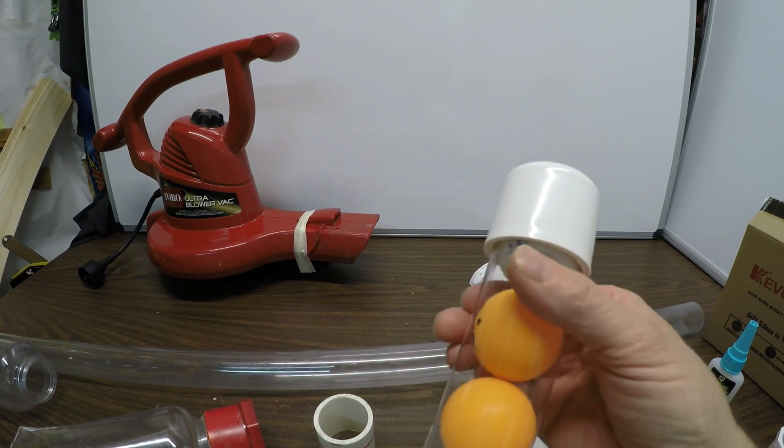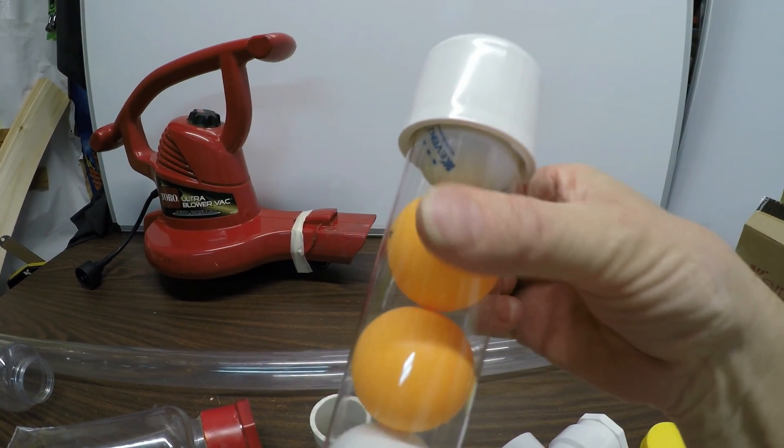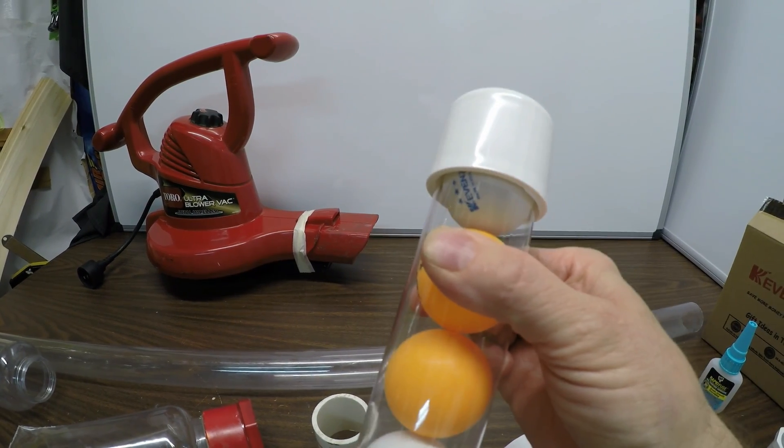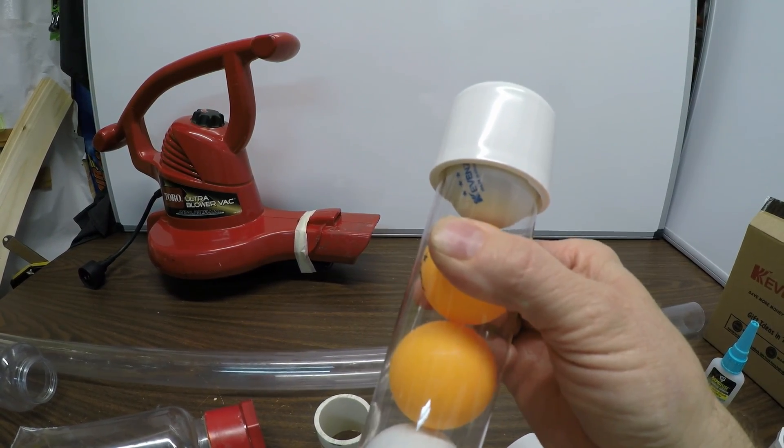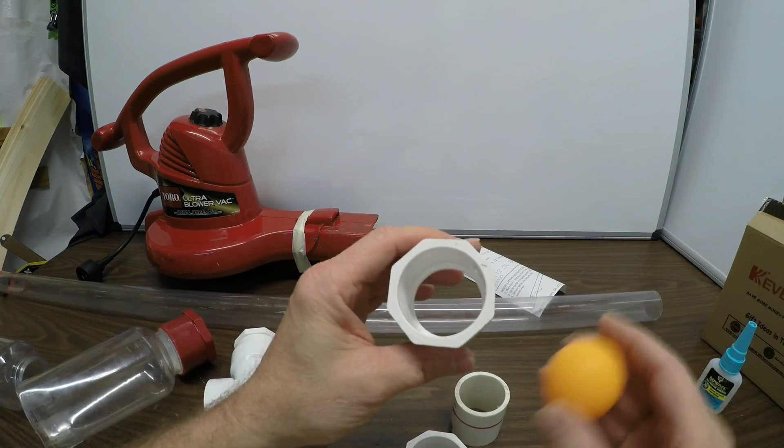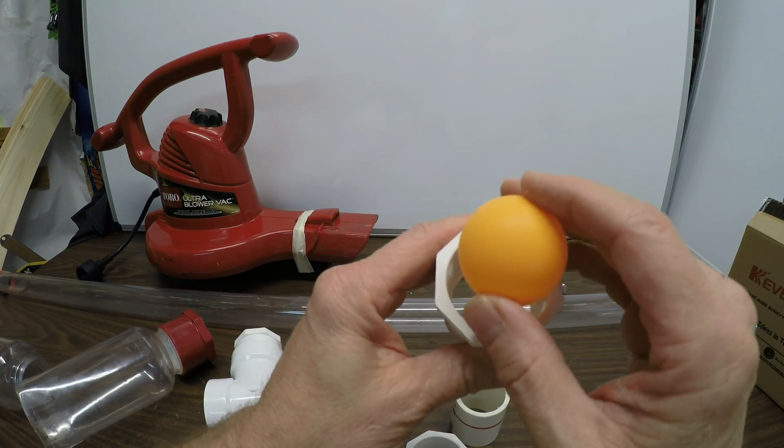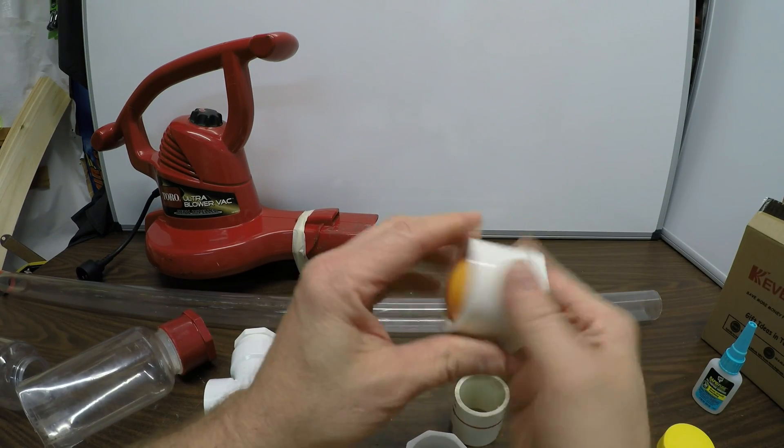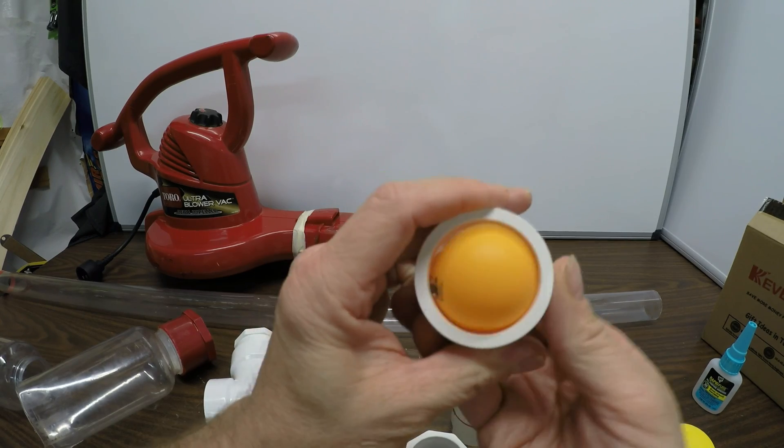And then the great thing about this polycarbonate tube is you can actually squeeze it and hold the balls in place when you load it up. For this inch and a quarter transition, it doesn't go in there. The ball is stopped.